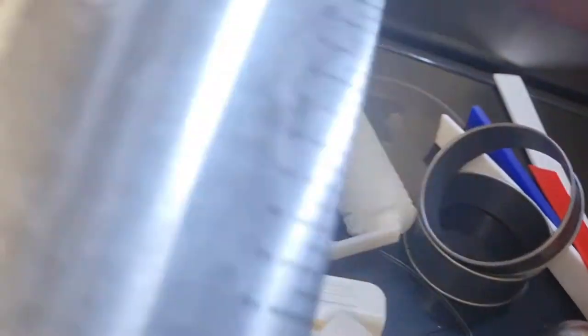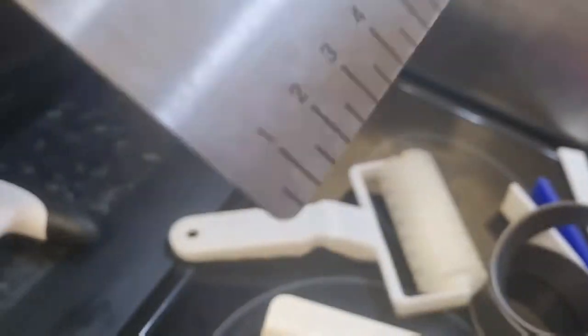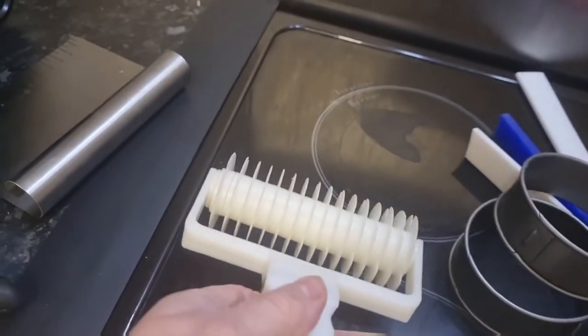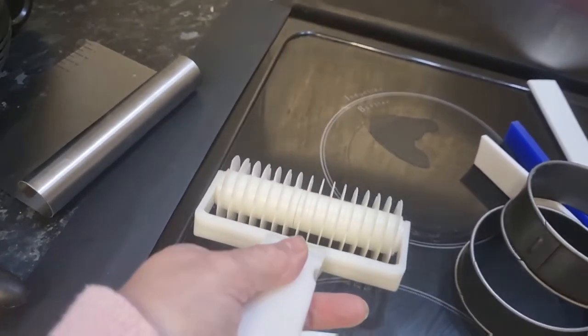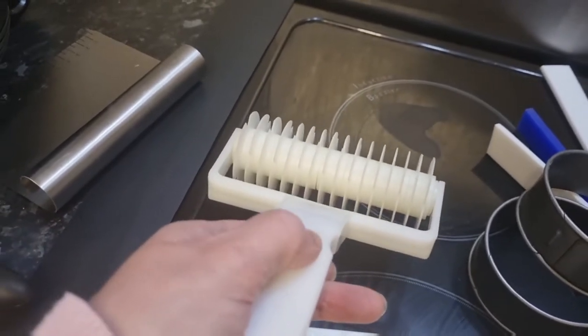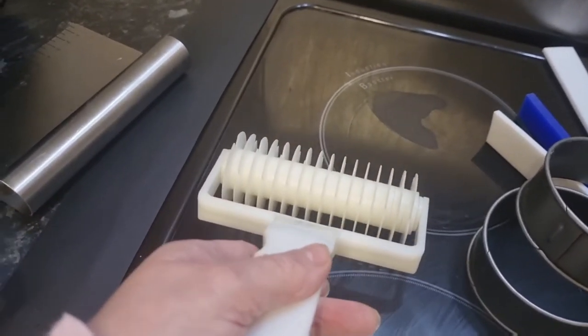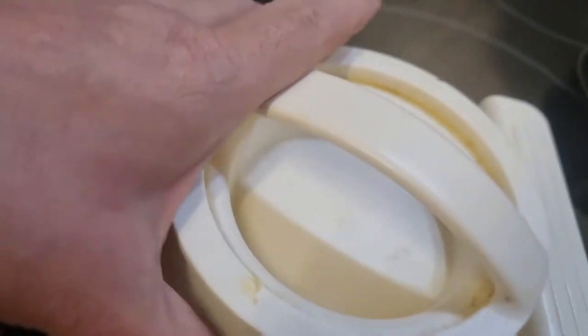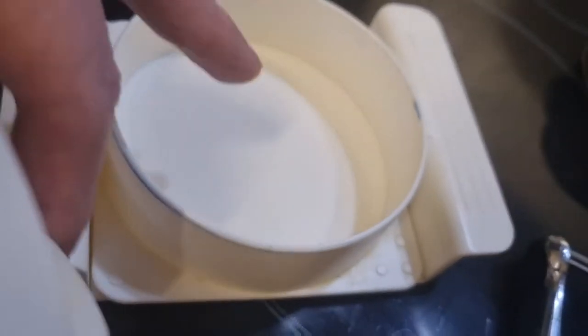Dough scraper - perfect for bread, measurements on there, perfect. A lattice pie maker - save you rolling out and cutting out different pieces of pastry. Roll out one piece of pastry, go along and you'll get a lattice top. Burger press - oh I love my burger press.